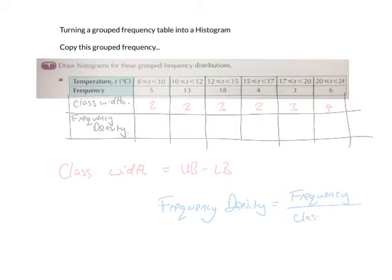Now, frequency density is our frequency number divided by that class width. So 5 divided by 2 is 2.5 and so on. And we just do that. We go across the table doing that. So that's the first step.